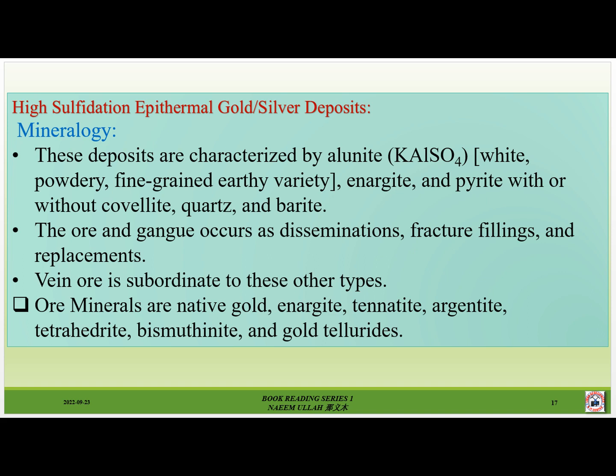Mineralogy. These deposits are characterized by alunite — white, powdery, fine-grained earthy variety — enargite and pyrite, with or without covellite, quartz and barite. The ore and gangue occurs as disseminations, fracture fillings and replacements, with replacements subordinate to the other types. Ore minerals are native gold, enargite, tennantite, argentite, tetrahedrite, bismuthinite and gold tellurides.